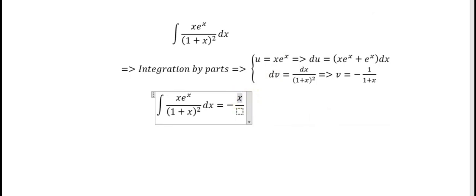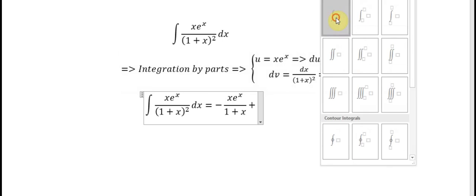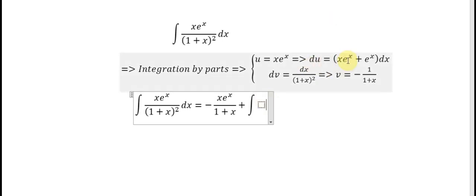xe^x over (1+x). This one converts to positive because we have the minus. And with e^x and x, we factor (x+1) divided by (x+1).